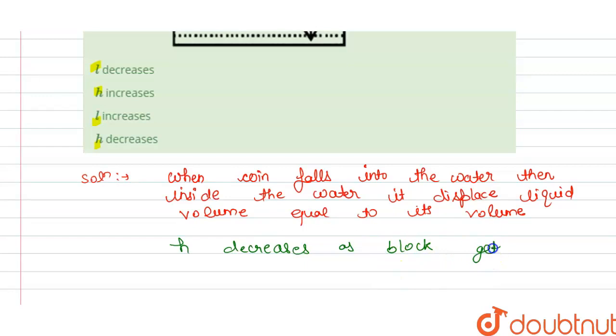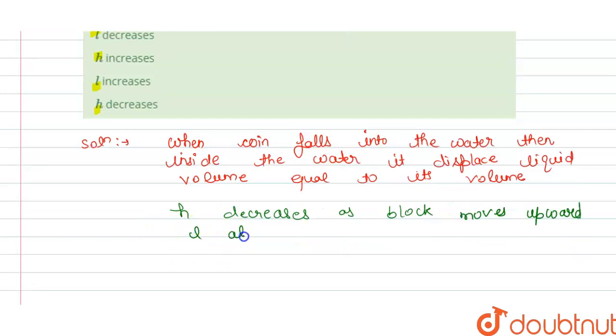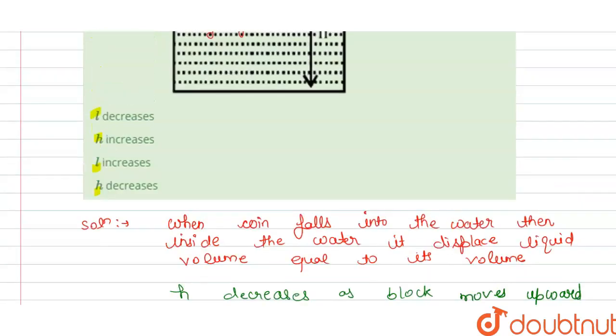The wooden block moves upward. And if it moves upward, then l also decreases. So from this we can say that h and l both are decreases - so l decreases and h decreases. So our option a and d is correct here. Thank you.